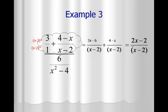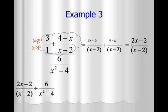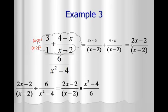Now I take the cloud answer and divide it by the other fraction, 6 over x squared minus 4. When dividing fractions, I copy the first fraction, change division to multiplication, and flip the second fraction so that x squared minus 4 is on top and 6 is on the bottom. The rule for multiplying fractions is to factor and then look for factors that will cancel.